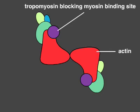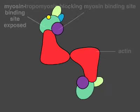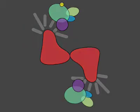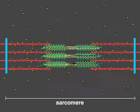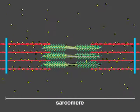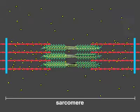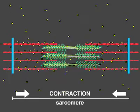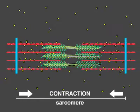When calcium floods the cell, troponin binds to it, moving tropomyosin off the myosin binding sites. Opening the myosin binding site on the actin filaments allows the myosin motors to crawl along the actin, resulting in a contraction of the muscle fiber.